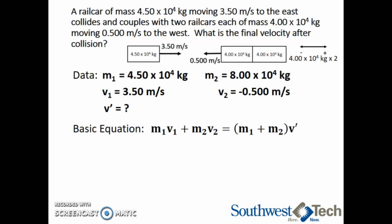The working equation to solve for V prime is M1 V1 plus M2 V2 divided by M1 plus M2. Make sure you use parentheses around M1 plus M2 when you type this into your calculator.